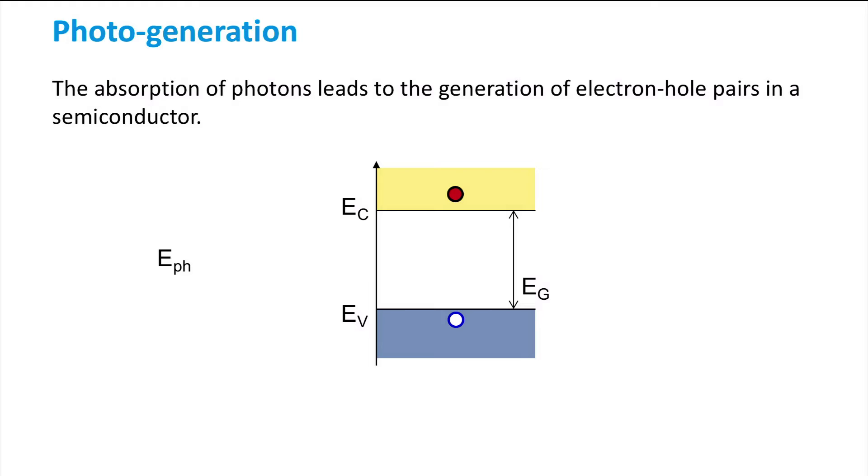It is important to remember that the excitation of an electron to an energy state in the conduction band leaves an unoccupied energy state in the valence band. This state is then occupied by a hole. Photogeneration results in generation of electron-hole pairs, or in other words, the concentration of mobile electrons and the concentration of holes in the material is increased by the same amount.